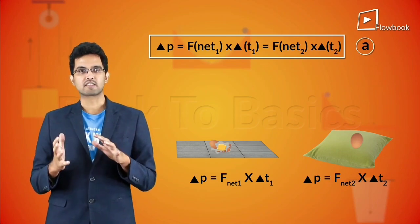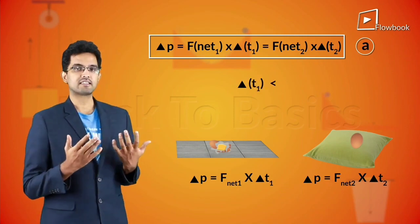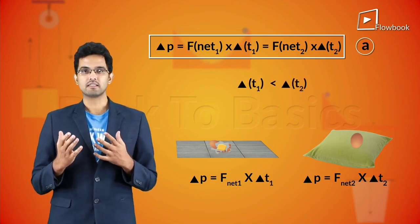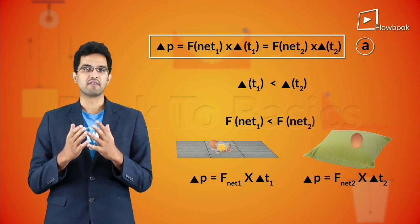However, the egg comes to rest faster when it hits the floor than the pillow. Therefore, del t1 is less than del t2. Thus, from equation A, we can say that f net 1 is greater than f net 2.